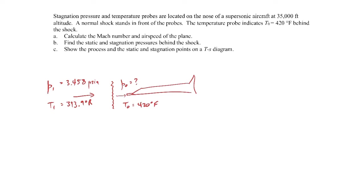So we're trying to find the Mach number and airspeed of the plane first. One of the things you should know is that the stagnation temperature does not change across a shock wave. So the stagnation temperature behind the shock wave will be the same as the stagnation temperature in front of it. So T01 will also be 420 degrees Fahrenheit. Let's convert that to degrees Rankine — that comes out to be 879 degrees Rankine. And T02 is the same stagnation temperature because it doesn't change across a shock wave.